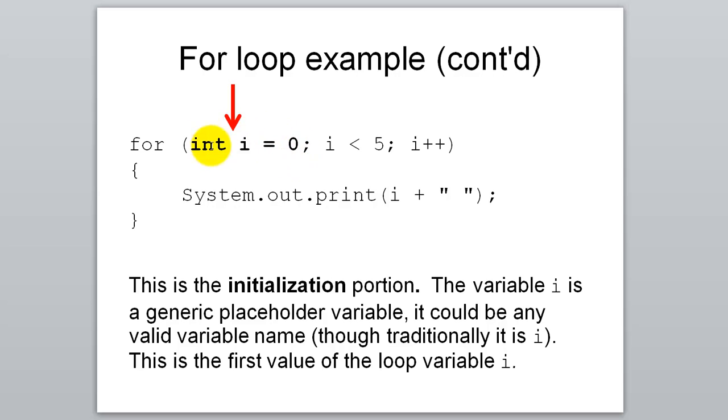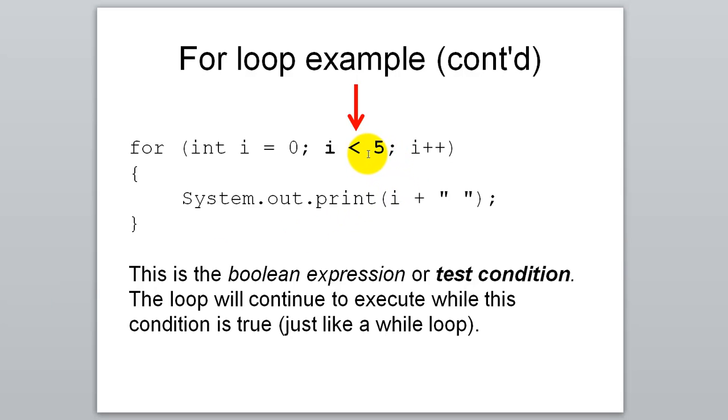The first part, we have the initialization portion. So as soon as this for loop starts, we're going to declare an integer variable i and set it equal to zero. This first part, the initialization portion, only runs right at the beginning of a for loop.